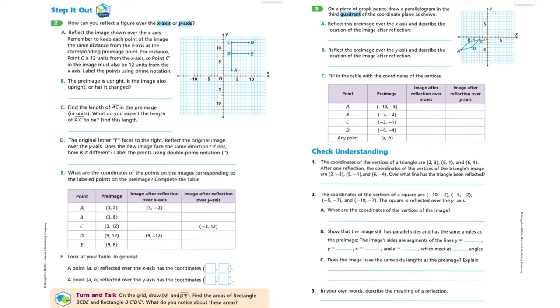This is really important. To keep each point of the image the same distance from the x-axis as the corresponding pre-image point. Point C is 12 units from the x-axis. So point C prime has to be 12 units along this same line here. It has to be 12 units from the x-axis down here at negative 12. So C prime would be down here. What they want you to do is label all these points, reflecting it over the x-axis, using prime notation.